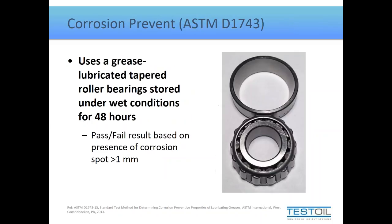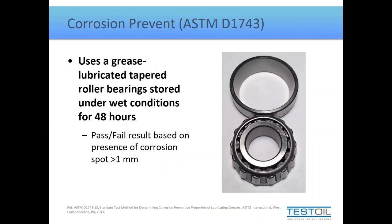To test corrosion prevention, a bearing is stored under humid conditions for 48 hours using a specific bearing with varying metallurgy across the outer ring, inner ring, cage, and rollers. If there is one dot one millimeter or larger on any component, the test fails. This makes it difficult to compare two failing greases, but a passing result confirms no dots greater than one millimeter — so a pass indicates good corrosion protection.